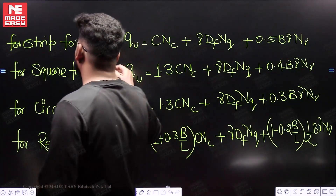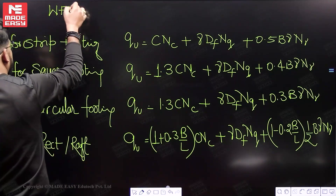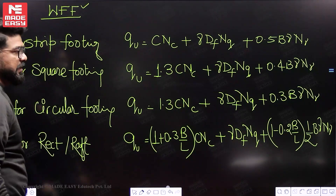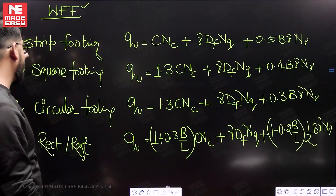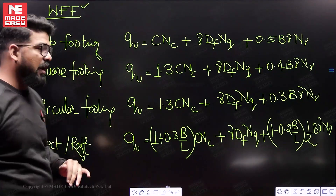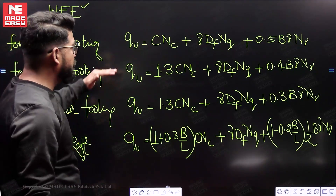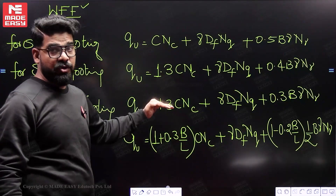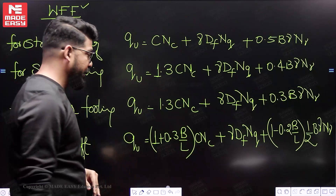Whenever a question comes, you have to check three things — WFF: W is water, F is footing, F is failure. First, check which shape of footing is there and accordingly use the Terzaghi equation. Next, when we talk about failure, the failure is assumed as general shear failure.